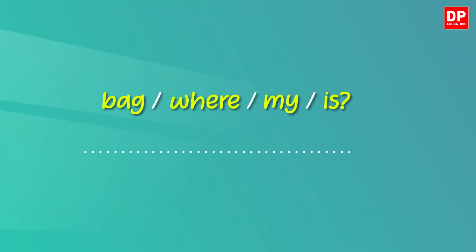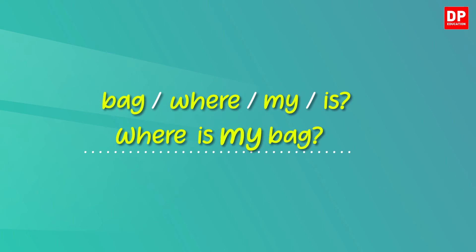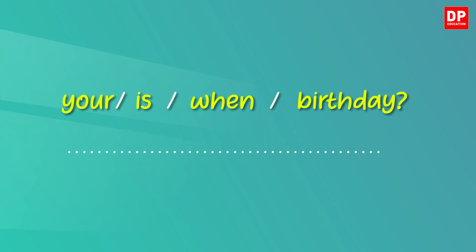Let's see how you have done it. Let's read the first one. Here the WH question word is 'where'. So let's start with 'where' and write the be verb 'is' after that. The noun phrase here is 'my bag', so you have to write: where is my bag? Don't forget to write a capital W at the beginning. Now let's check the second one — you have to write: when is your birthday. Again, you have the WH question word, the be verb 'is', and the noun phrase 'your birthday'.